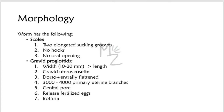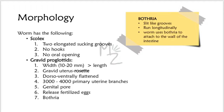The scolex has no oral openings. Gravid proglottids: the proglottids are wider than they are long, and the gravid uterus is in the form of a rosette. It is dorsoventrally flattened, has 3,000 to 4,000 primary uterine branches, and has a genital pore through which it releases immature eggs. It also has bothria — slit-like grooves that run longitudinally — which the worm uses to attach to the intestinal wall.